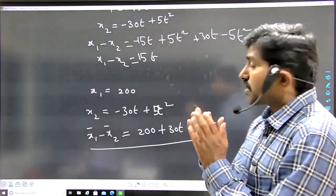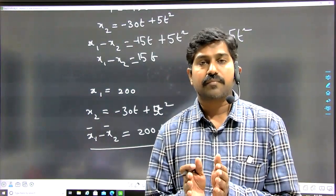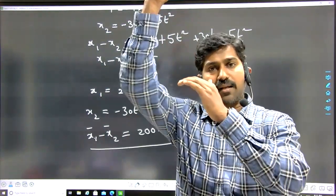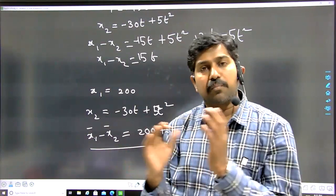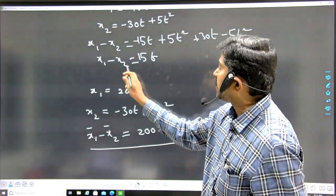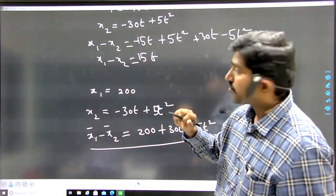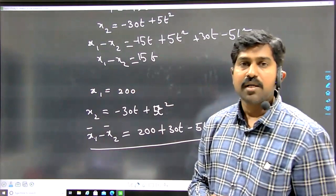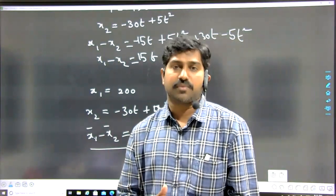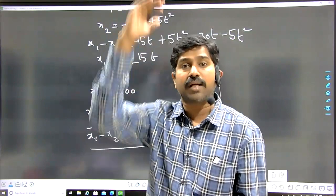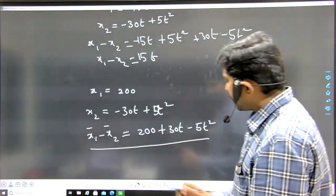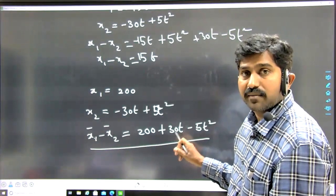When both particles are projected simultaneously upward from 200 meters height, the separation while both are in air is simply 15t — directly proportional to time, shown as a straight line on the graph. But when one particle reaches the ground and the second is still moving under gravity, the equation becomes 200 plus 30t minus 5t squared, which gives the curved part in the graph.